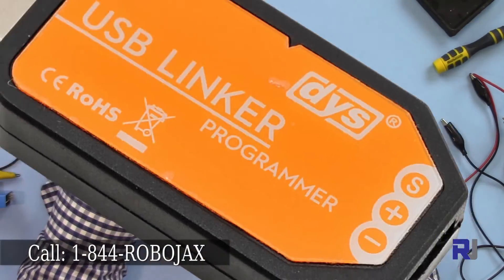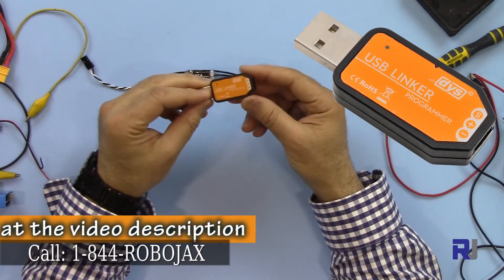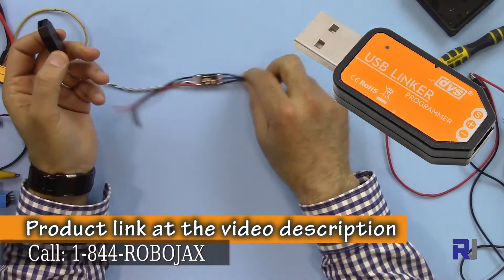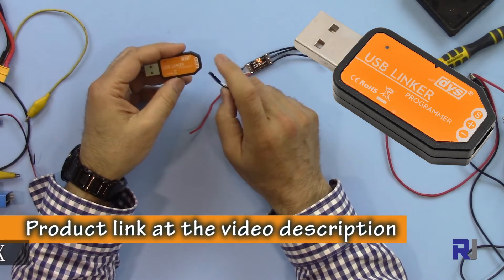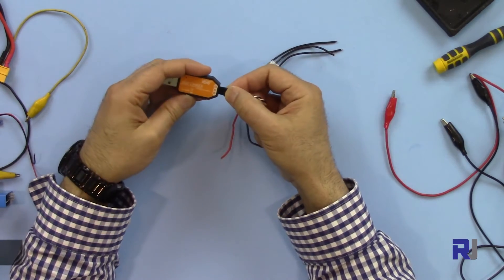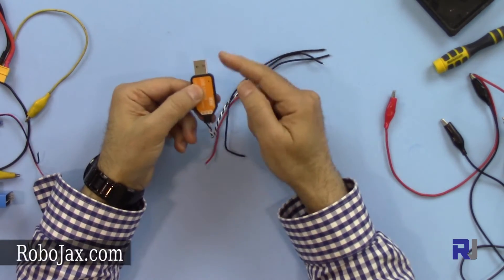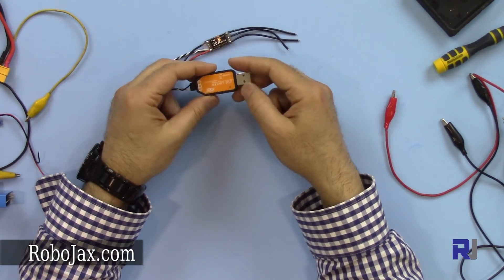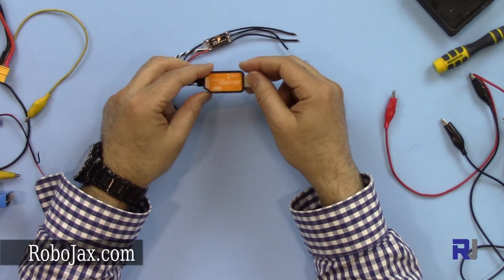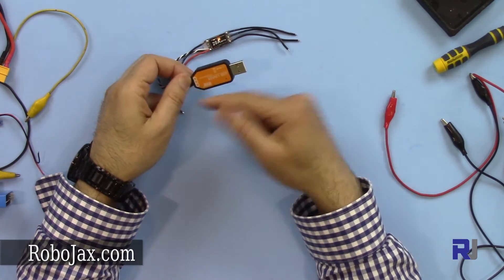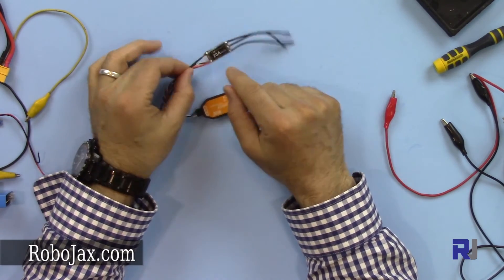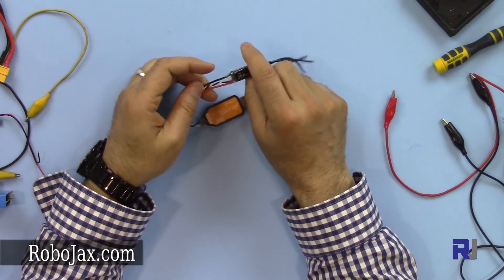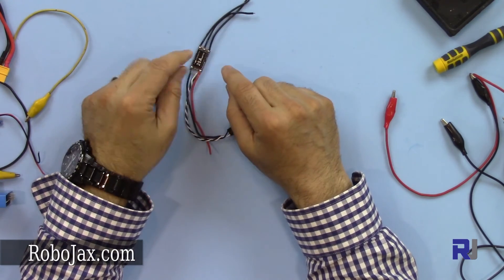This can be programmed using the USB programmer that we have on our website. Simply plug in the signal connector, plug this to the USB, and then you can run the Little Bee studio and program and tweak all the values. The firmware for this one is also available, different firmwares for different purposes you can download.